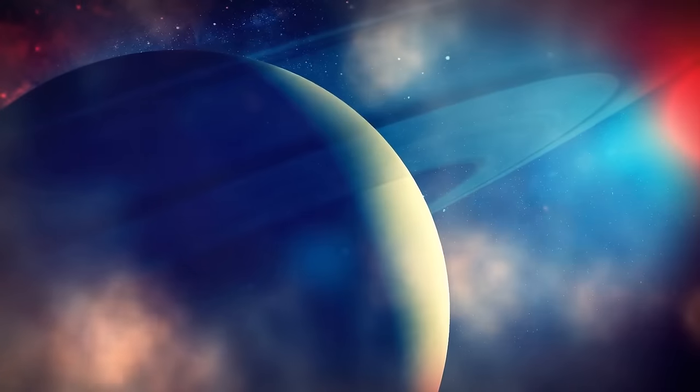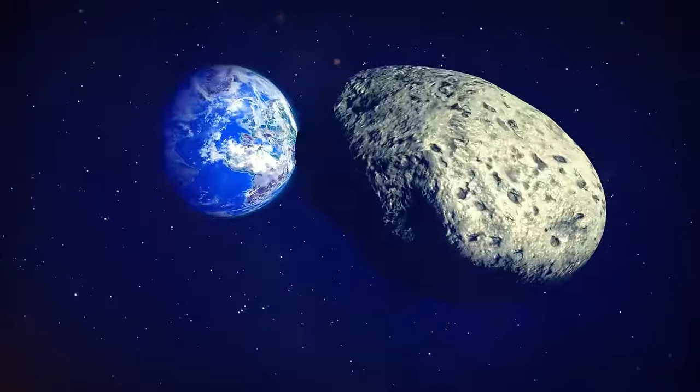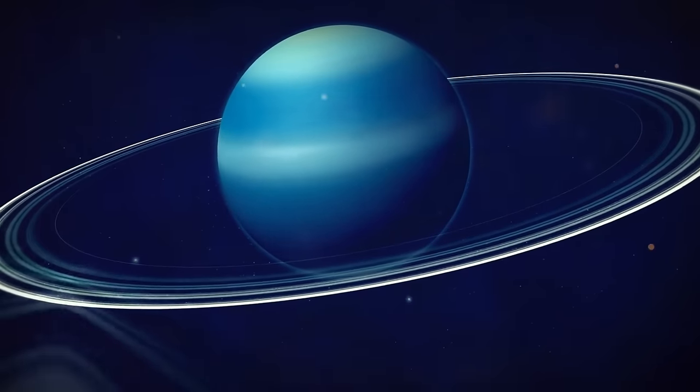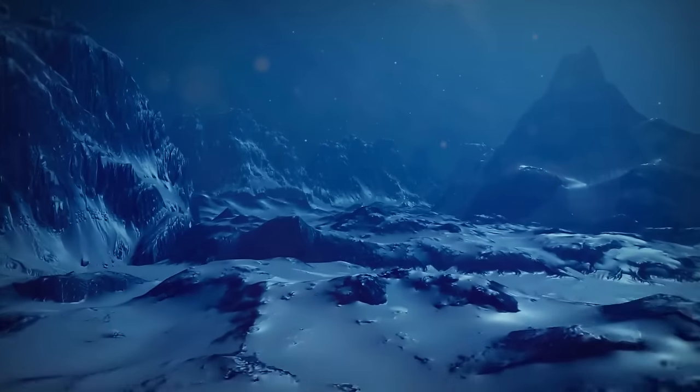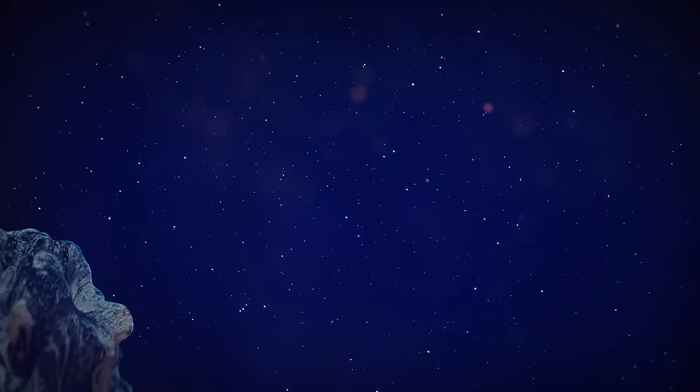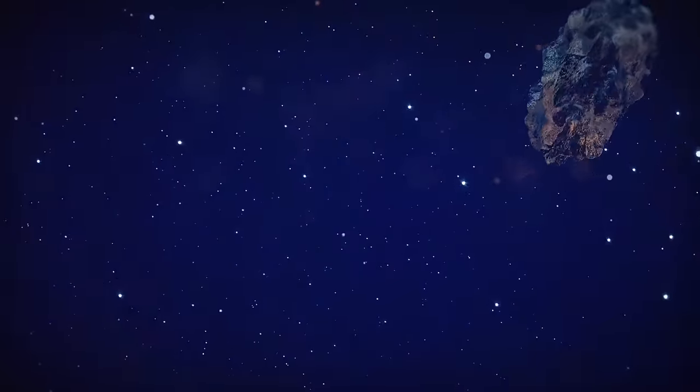Something huge slammed into Uranus too, changing the planet forever. A space object twice bigger than Earth hit the ice giant. This left the planet tilted, and it looks as if it's rotating on its side. Uranus is extremely cold, way colder than it's supposed to be. It might mean that the object that slammed into it was probably a young protoplanet made up of ice and rocks.